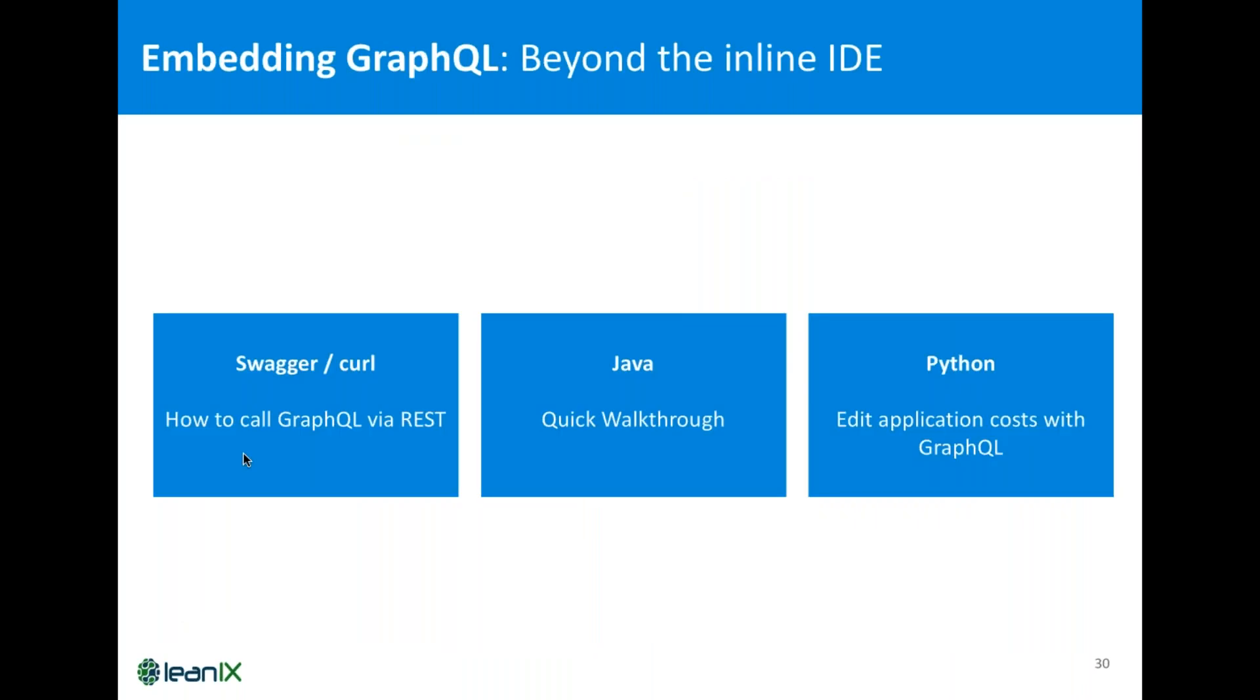So, quick summary. We covered some important concepts, but now let's move on. Let's move beyond the Inline IDE to see how to deal with GraphQL in the real world in production. I want to start with Swagger and Curl. For those of you who don't know Swagger, I will give a really brief intro. But then, I will quickly move to Java and to Python, because the concepts you see in Java are typical for other programming languages like C-Sharp, whereas the concepts you see in Python are typical for other programming languages like JavaScript. So, it gives you an overview about how easy it is to get started here.